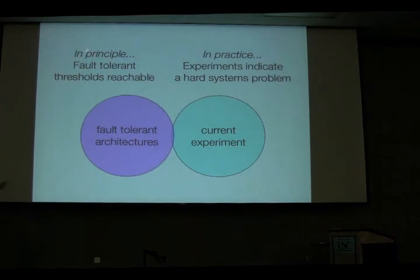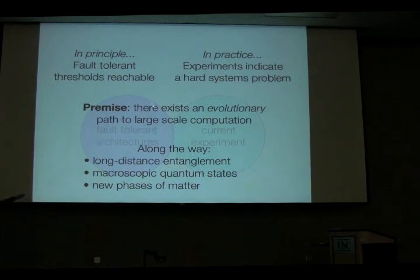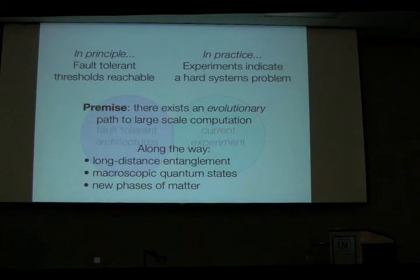It's the standard problem that, in principle, fault-tolerant thresholds are reachable, but in practice, the experiments indicate that we have a very difficult system-level problem. The premise of this talk is that there's going to exist some type of almost evolutionary path in which we can take the approaches occurring in current experiment and get all the way to a fault-tolerant architecture. Most experimentalists assume that this path exists — they're looking for a series of steps to take their device and turn it into a computer.